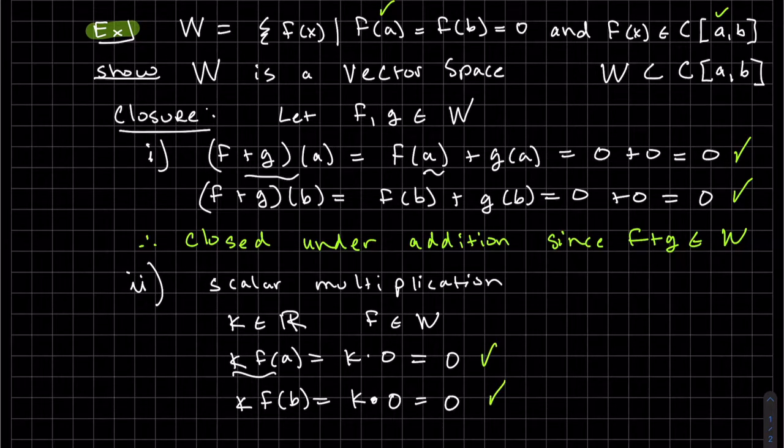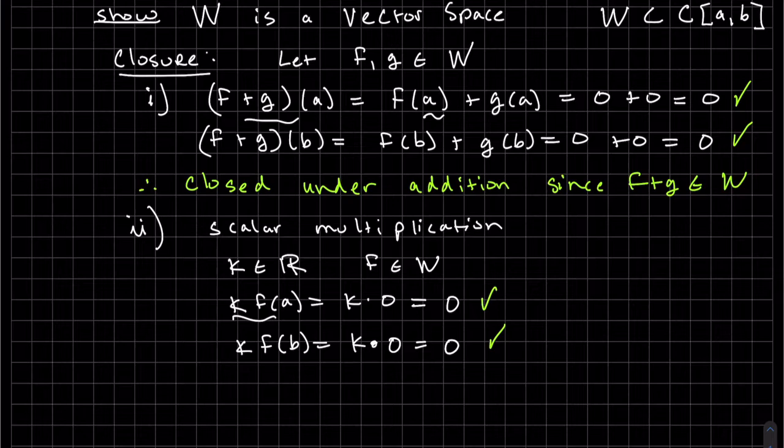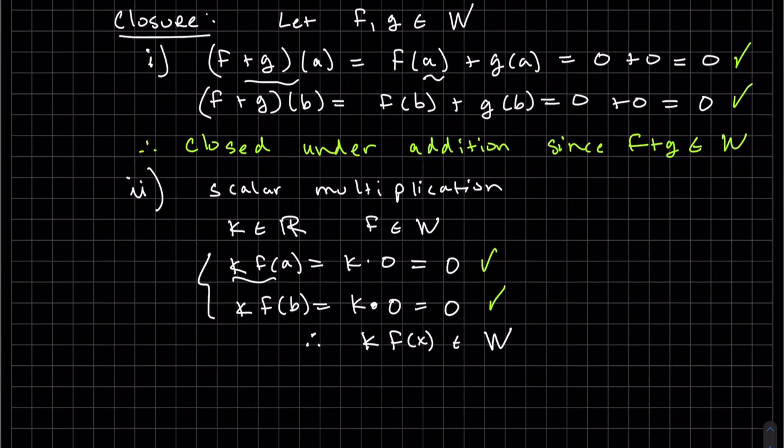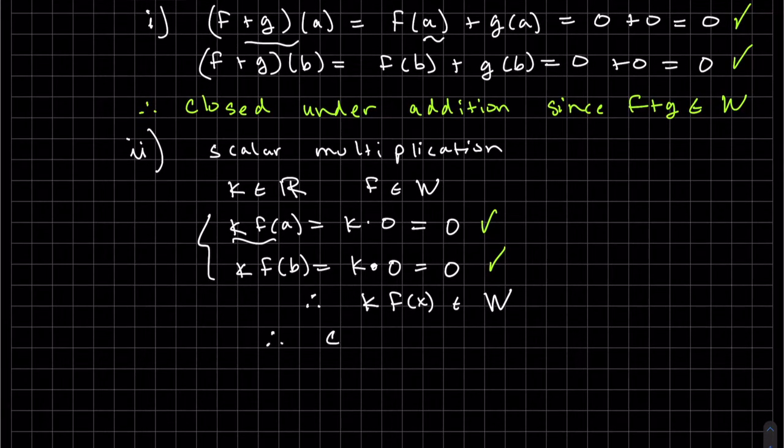This does meet the criteria that both endpoints are 0. Therefore, K times F of X is in W. Therefore, it's closed under scalar multiplication.